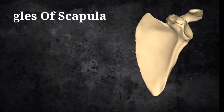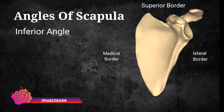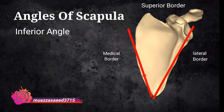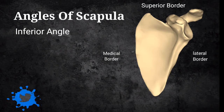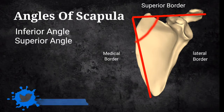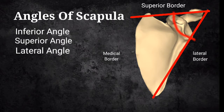There are three angles of the Scapula Bone. The inferior angle is between the medial and the lateral border. The superior angle is present in between the superior and the medial border. And the third one is the lateral angle, which is in between the superior and the lateral borders.